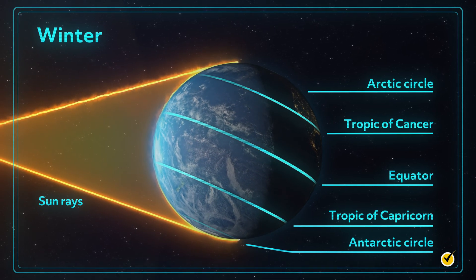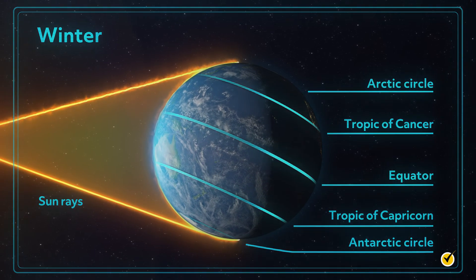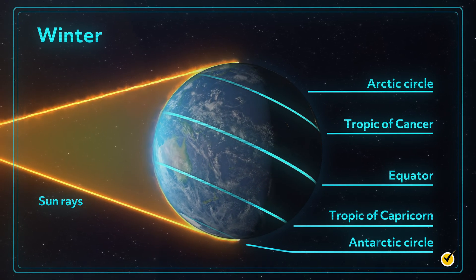During North American winter, the Antarctic Circle gets their polar day, while the Arctic Circle experiences a polar night.